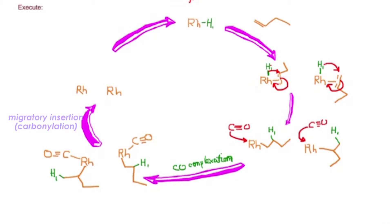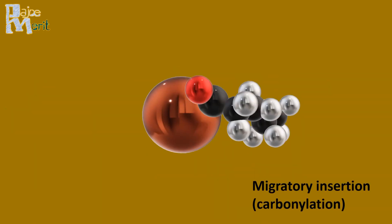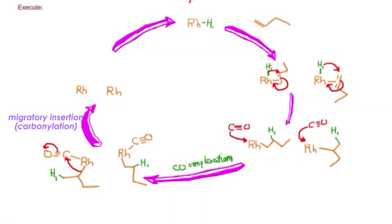The next step is a second migratory insertion called carbonylation. The bond between carbon and metal cleaves and migrates over to the carbon, and the pi bond of CO forms a lone pair on oxygen, converting it from a formal charge of plus to neutral. The same process occurs for the other side product.